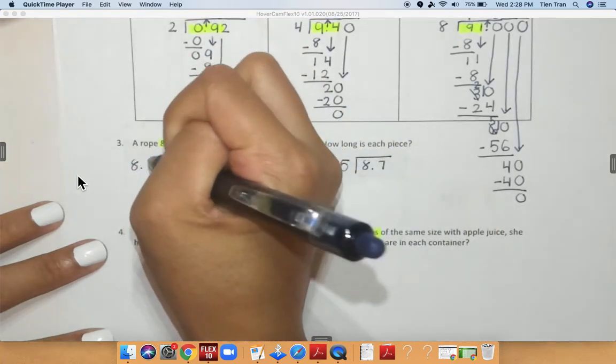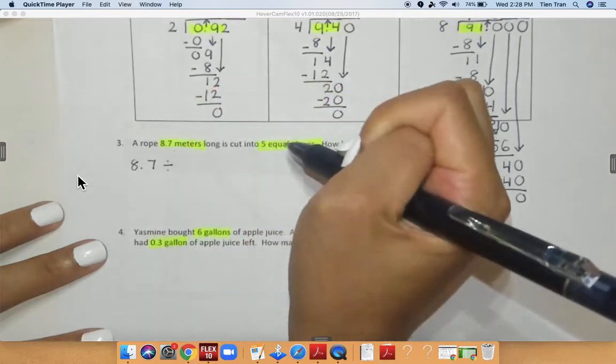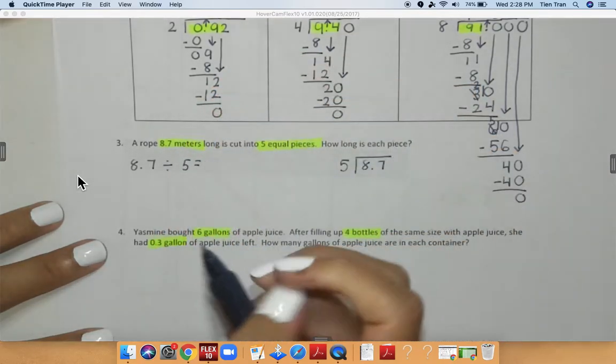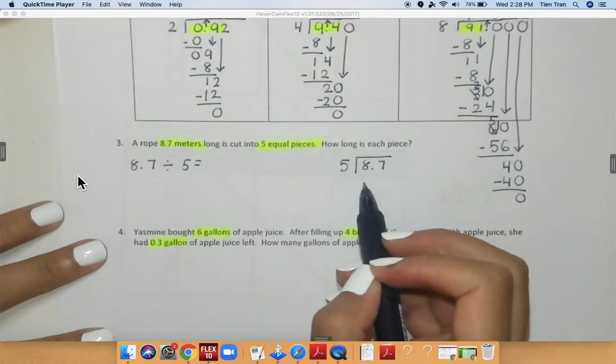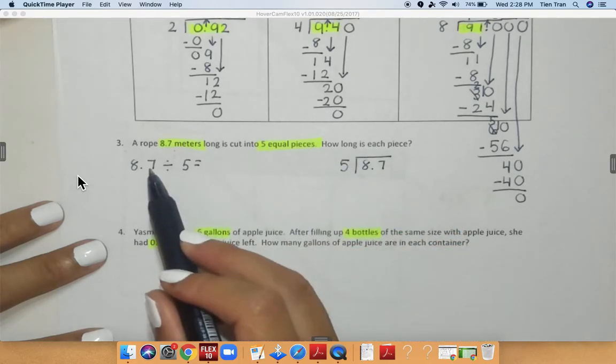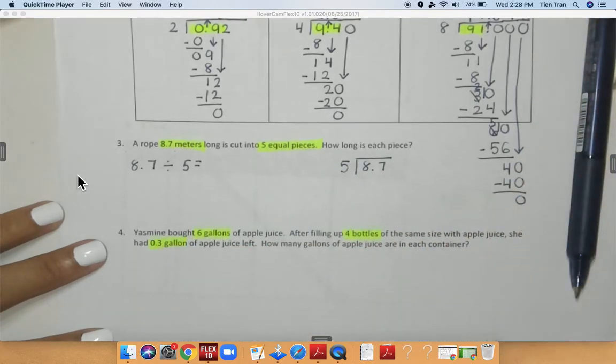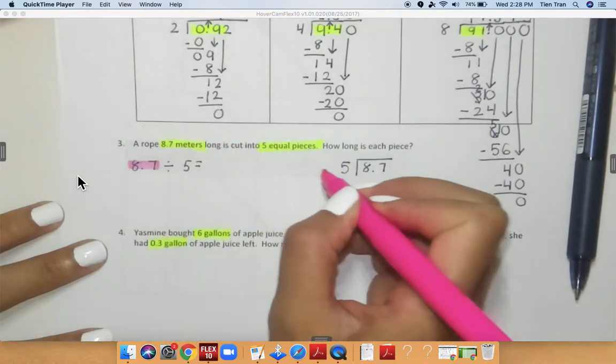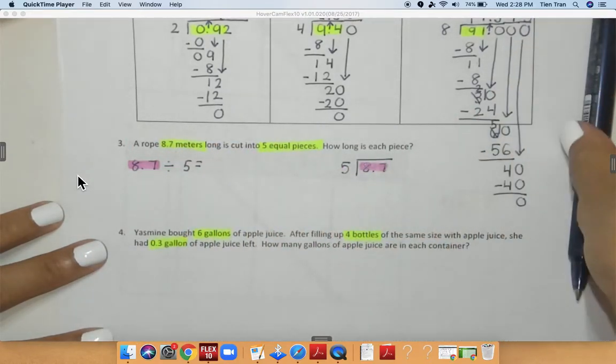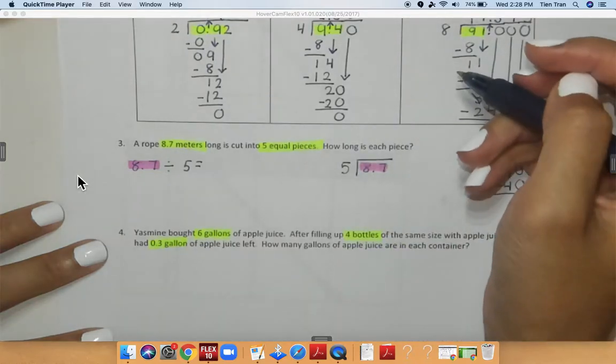So we know that the rope is 8.7 and you're dividing that by five equal pieces. They want you to plug this number into an equation. So that's what I did. My first number, which is 8.7, is going to be my dividend, the number that goes inside, and my divisor is five.